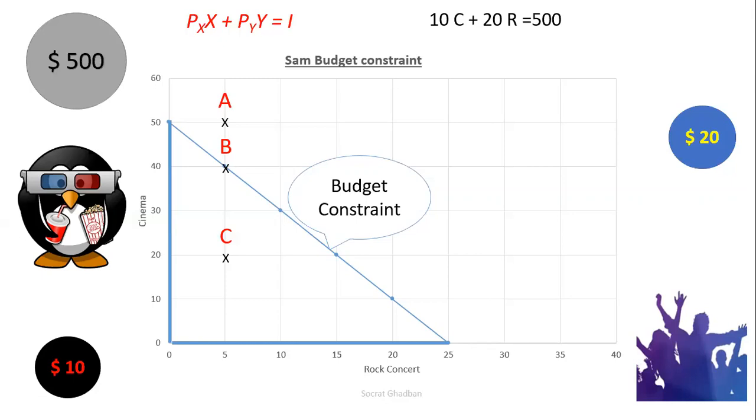Now we will consider if we have any change in price of one of these products or goods, what will happen to the budget constraint. So if we imagine that the price to go to the concert decreased from 20 to 12.5, logically Sam can go more to the concert because he can buy more tickets. Now the price decreased. So as you can see, the red line represents the new budget constraint. I invite you to write down the equation for this new budget constraint and I'll make it available in the description of this video. Like this, you can test your knowledge.